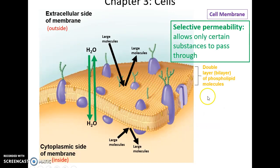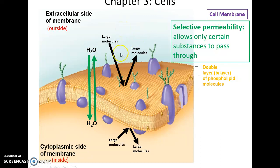This barrier allows the cell membrane to have selective permeability. Some materials can cross through the membrane, such as water, while other materials cannot pass through, such as really large molecules or charged molecules.